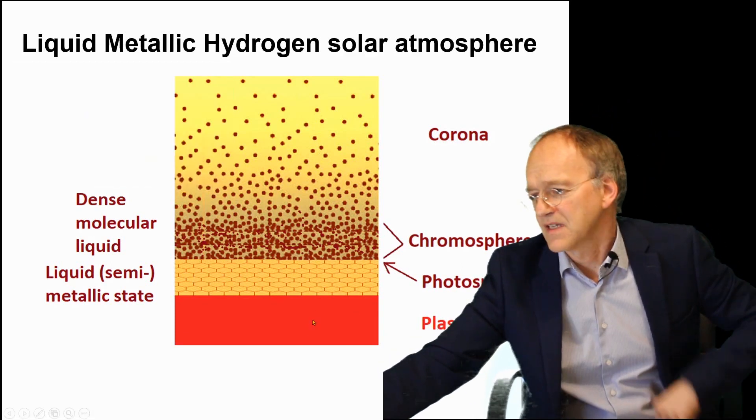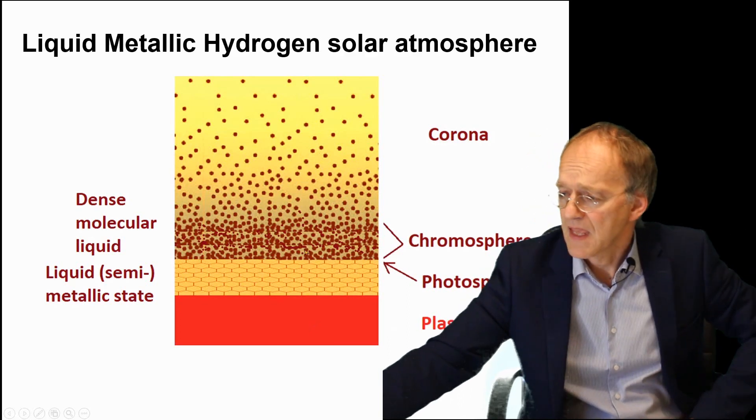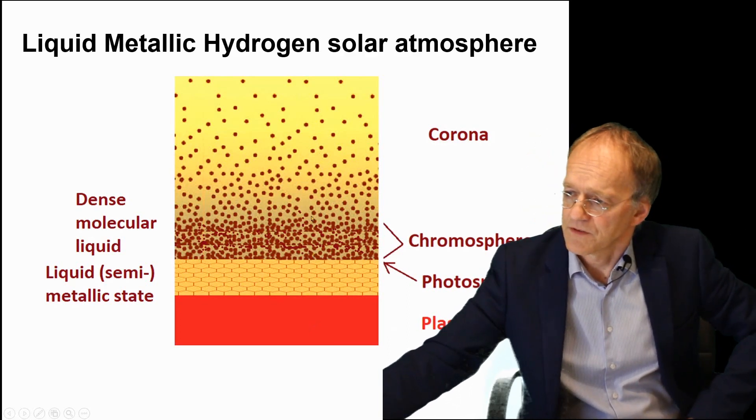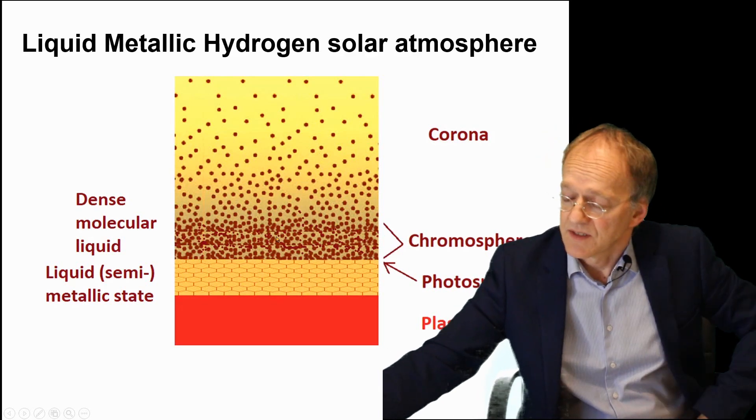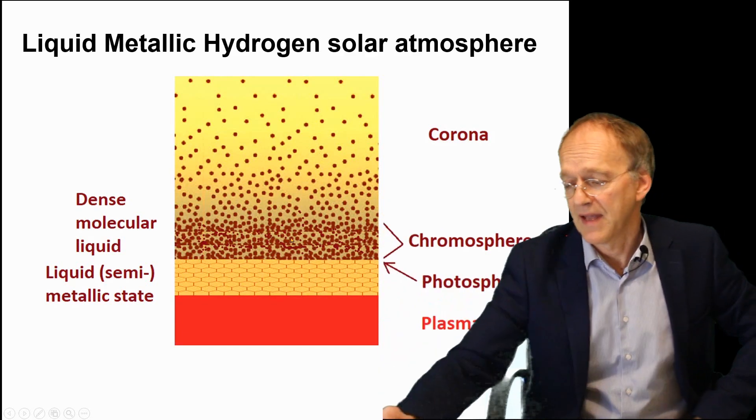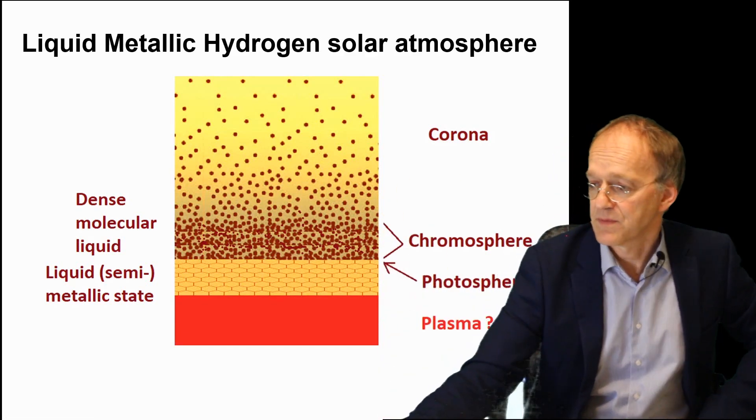Maybe Robitaille would not agree that it's a plasma here, but that's a sideline. Then you would have the chromosphere above, which is as a matter of principle transparent and contains just some of these atoms responsible for the black lines in the Fraunhofer spectrum.